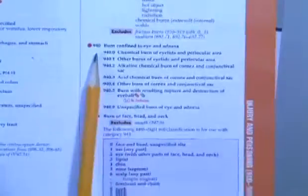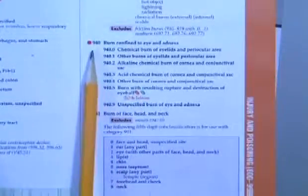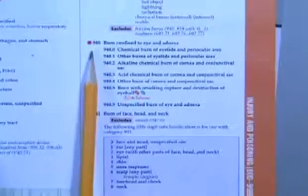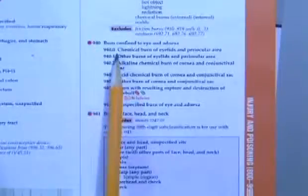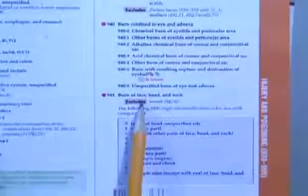So the first thing we need to identify with burns is we've got these three digit categories. So 940, burn confined to eye and adnexa. And by the way, the range for the burn category, it's telling us it goes from 940 to 949. So let's just get a lay of the land. What's the difference between the categories of three digits? 941 is burns of face, head and neck. And 942, I'm going to turn the page.